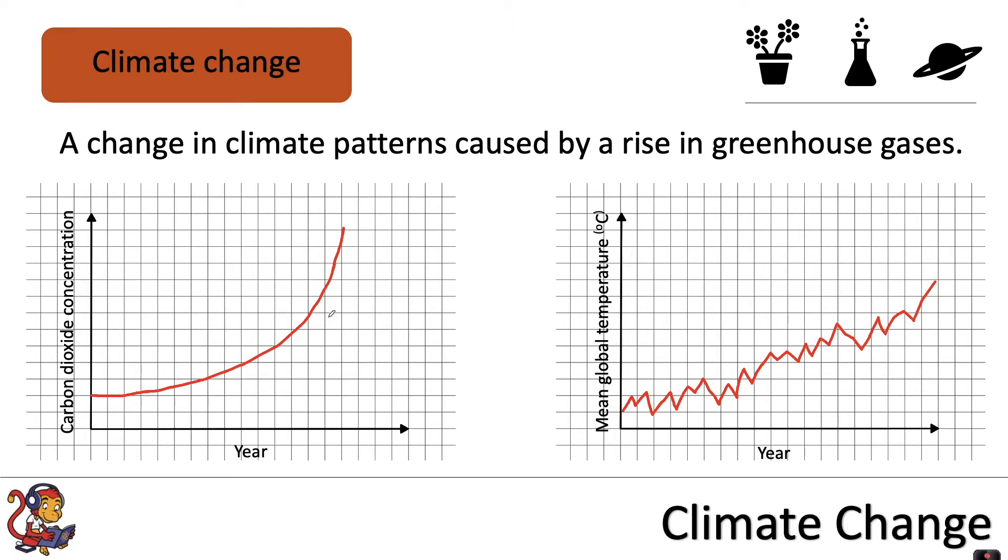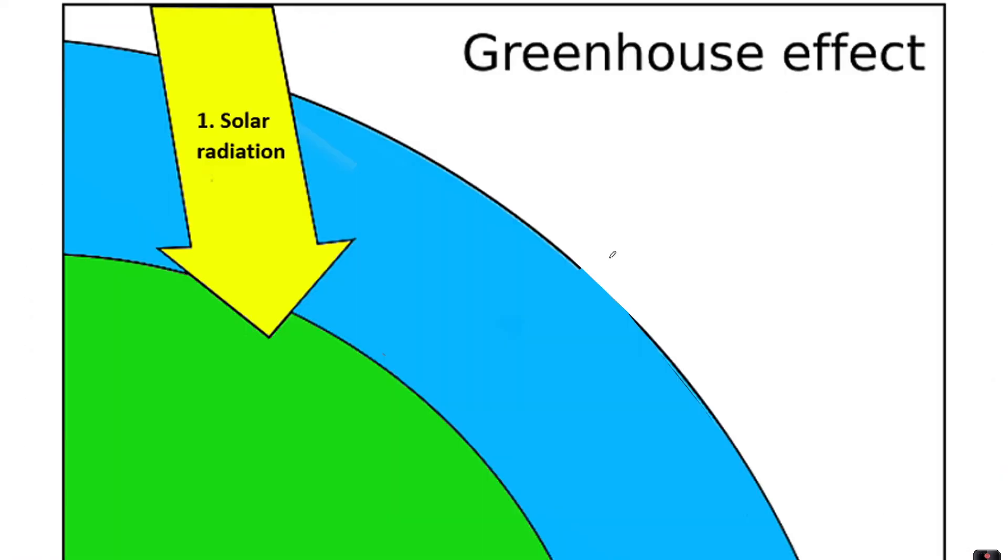There have been thousands of studies into the link between an increase in carbon dioxide concentration and an increase in mean global temperature. The scientific studies have been reviewed by other independent scientists in a process called peer review. Now amongst scientists, there is an agreed consensus that the increase in carbon dioxide concentration is causing the global warming that we see.